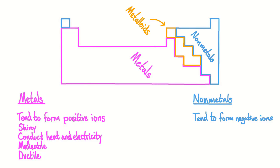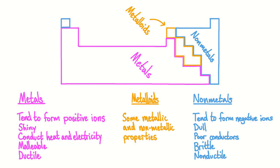Non-metals tend to be the opposite: dull, poor conductors of heat and electricity, brittle, and non-ductile. Metalloids have some metallic properties and some non-metallic properties. Metals include some familiar names such as copper and iron, and also substances we may not think of as everyday metals, such as sodium and calcium. You may think to yourself, sodium is a metal? But table salt — sodium chloride — has sodium in it, and it's a white crystal, not a shiny metal. To answer this question, we need to look at the different types of substances and compounds that can be formed by bonds between metal and non-metal elements.